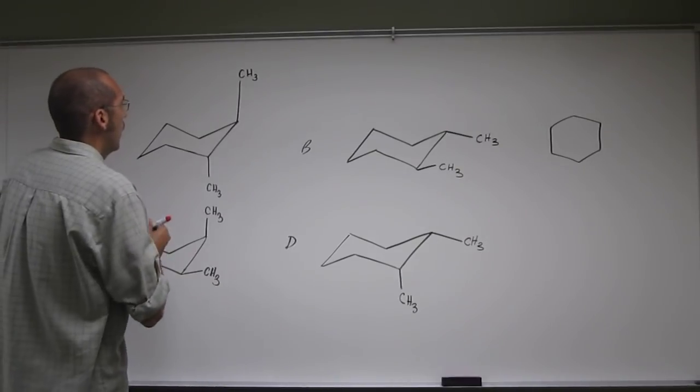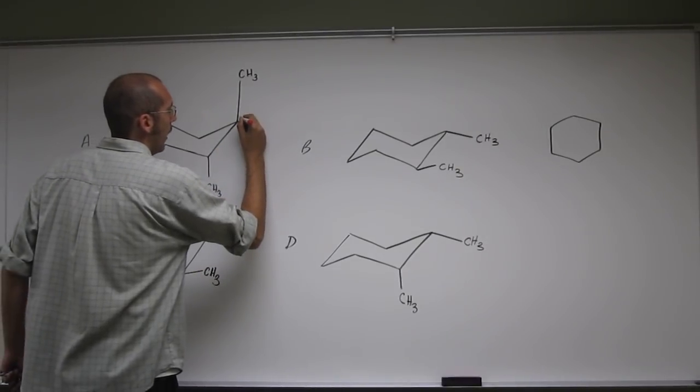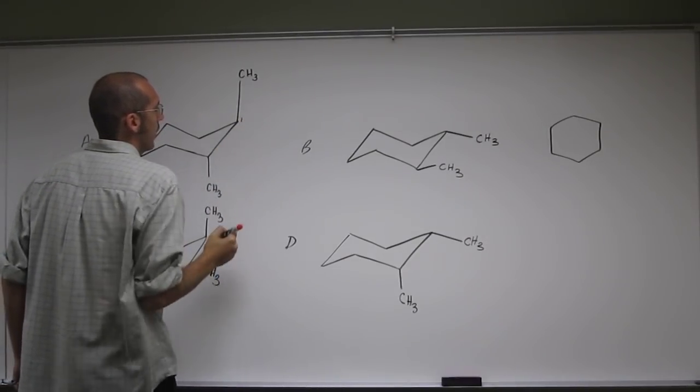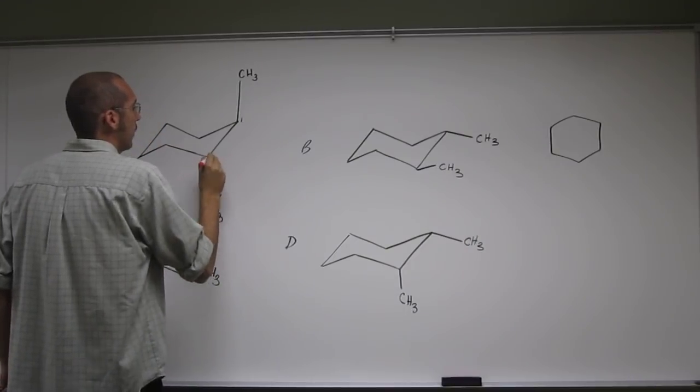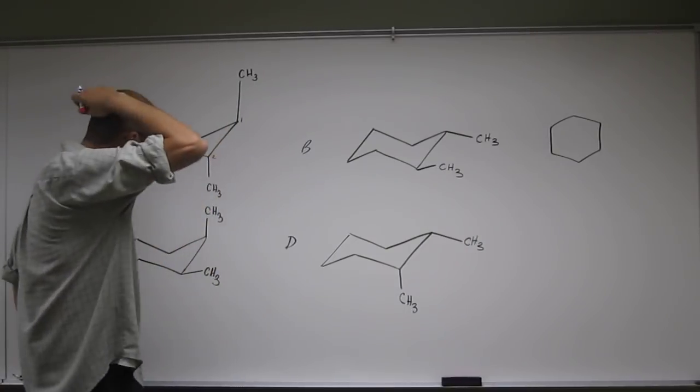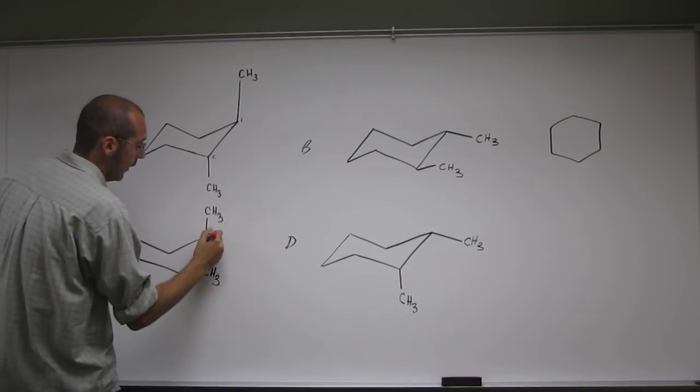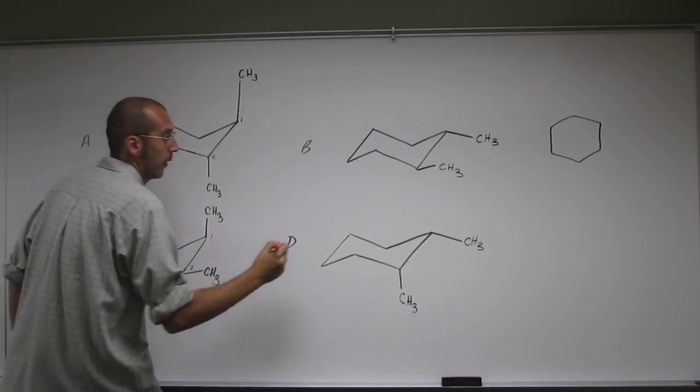What I'll do is I'll label this top right atom always, that top right carbon is 1, and then go around the ring 1, 2, 3, 4, 5, 6 like that. Let's just go ahead and do that with all of them.